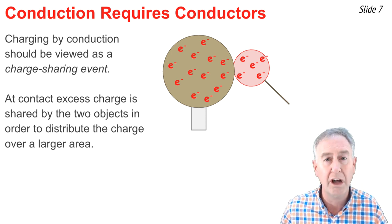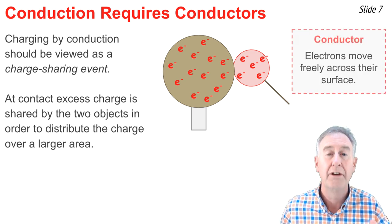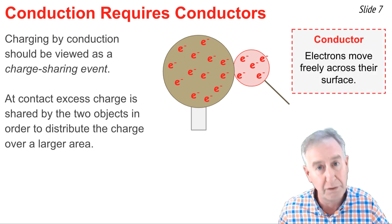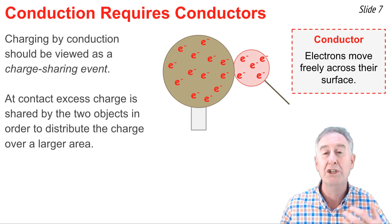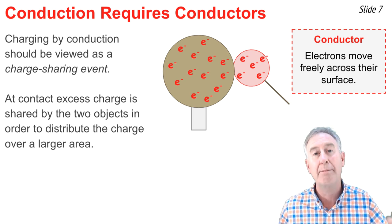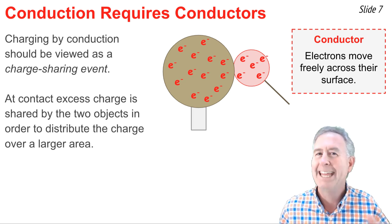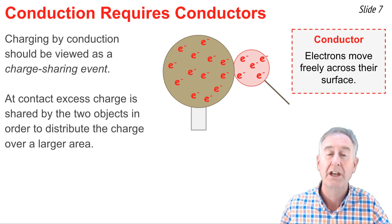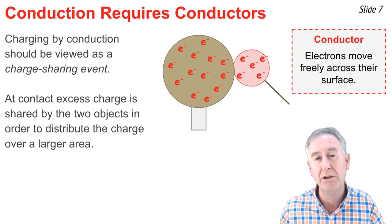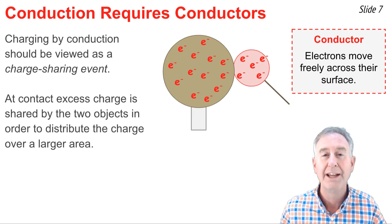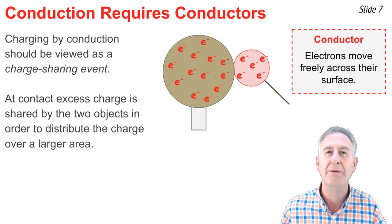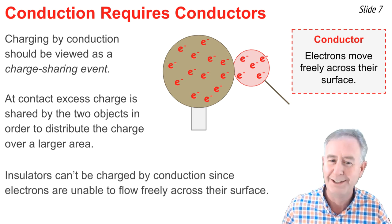Now, in order for this to occur, electrons have to be able to move from A to B and across the surface between A and B in order to distribute themselves evenly about the larger surface area. And that would never happen with insulators. Only conductors allow for the free flow of electrons across their surface. And so that's why we say charging by conduction requires conductors.